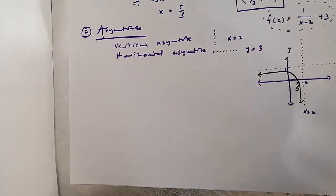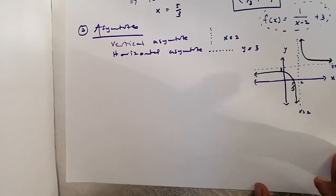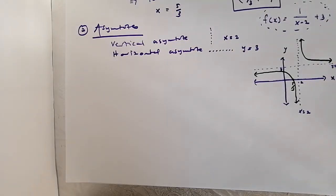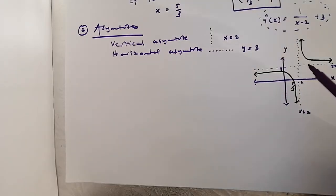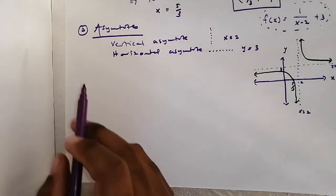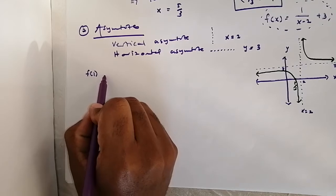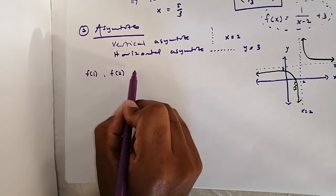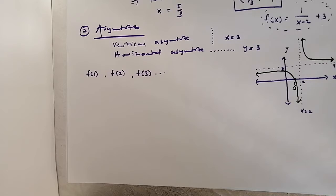The graph will not touch the asymptotes no matter what — that's our hyperbola. As stated, the graph was shifted 2 units to the right and 3 units upwards from the mother function. If you're asked to find extra points you can evaluate f(1), f(2), f(3), etc., but for this video we'll focus on interpreting the graph.